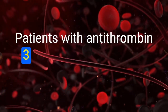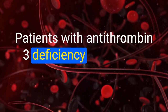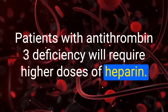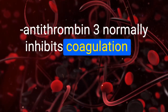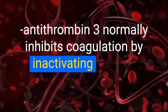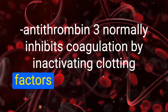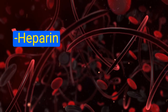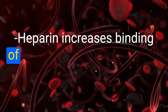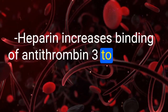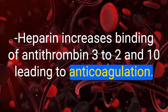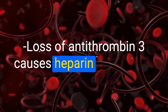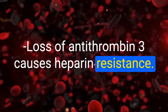Patients with antithrombin III deficiency will require higher doses of heparin. Antithrombin III normally inhibits coagulation by inactivating clotting factors 2 (thrombin) and 10. Heparin increases binding of antithrombin III to factors 2 and 10, leading to anticoagulation. Loss of antithrombin III causes heparin resistance.